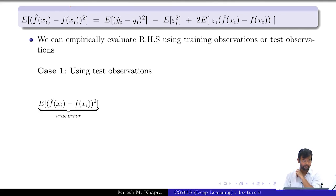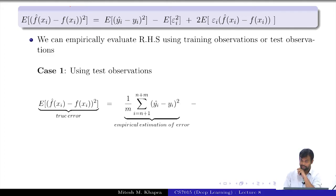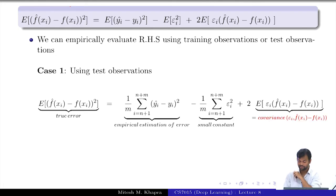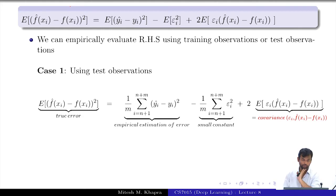The quantity on the left-hand side is the true error — it contains f(x), which we do not know. On the right-hand side: the first quantity is the empirical estimation of the error, the second is a small constant since epsilon_i squared comes from a normal distribution with small variance. The third quantity is a covariance between two things.